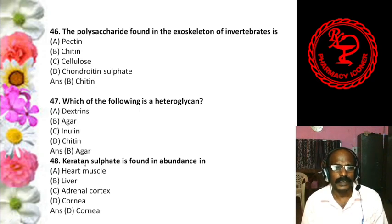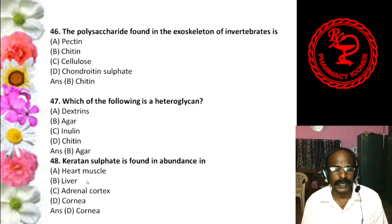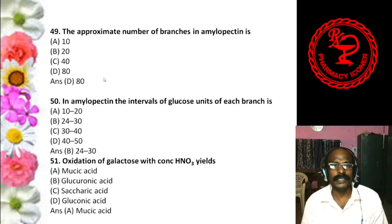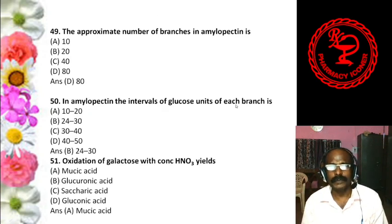Question 10: In amylopectin, the interval of glucose units at each branch is — A. 40 to 50 units, B. 24 to 30 units, C. 10 to 20 units, D. 30 to 40 units. Amylopectin is formed when starch is hydrolyzed into amylose and amylopectin. The answer is B, 24 to 30 glucose units.